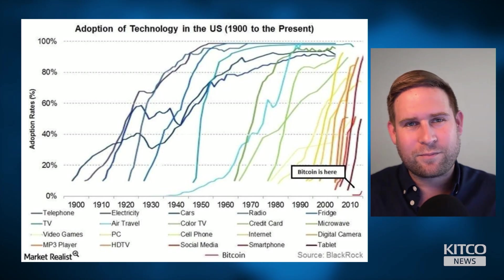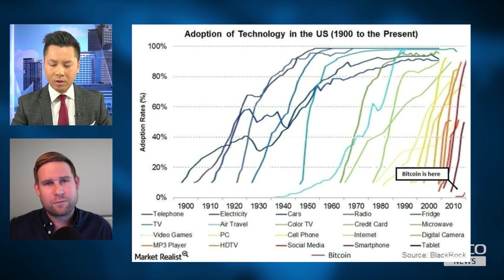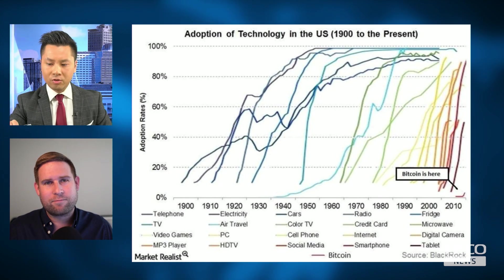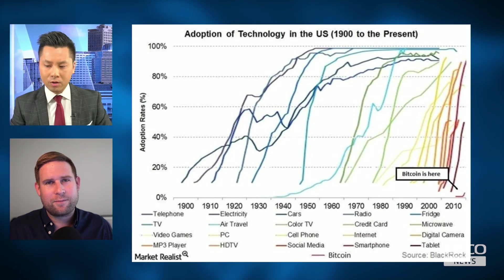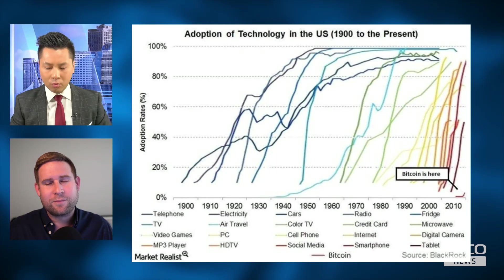Why do you think the curve for Bitcoin is different from later technological innovations like social media and tablets? Bitcoin has been flat throughout most of its history, and it's only in the last couple of years that it started to ramp up in terms of adoption — versus social media or smartphones, which started exponentially growing right away. Why is that?